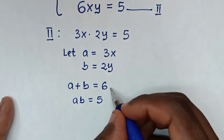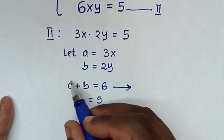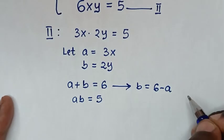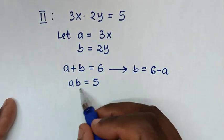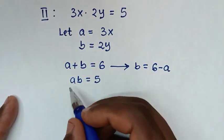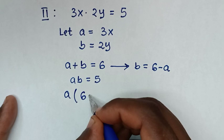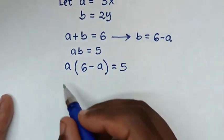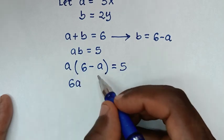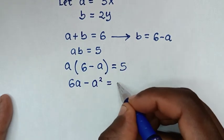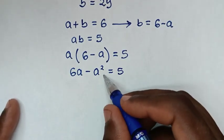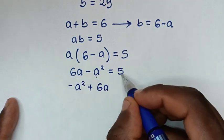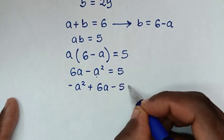In the next step, from equation 1 we take a to the right side, so b is equal to 6 minus a. We substitute 6 minus a for b in equation 2, giving a times (6 minus a) equals 5. Expanding: a times 6 is 6a, and a times negative a is negative a squared, so negative a squared plus 6a equals 5. Taking 5 to the left side gives negative a squared plus 6a minus 5 equals 0.